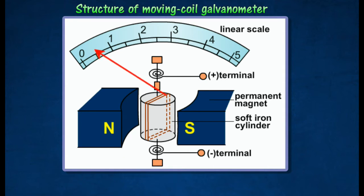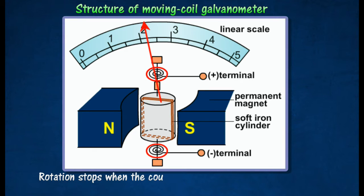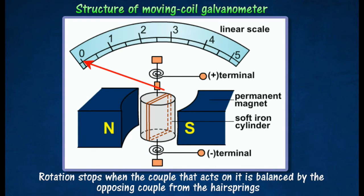When current flows, a couple acts on the coil, causing it to rotate. The rotation of the coil is opposed by the hair springs and will come to a stop when the couple that acts on it is balanced by the opposing couple from the hair springs. The greater the current, the greater is the deflection of the coil, which is shown by a pointer attached to the coil.